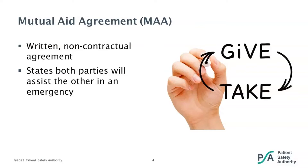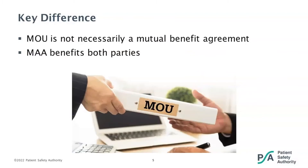A mutual aid agreement is very similar to a memorandum of understanding in that it is a written, non-contractual agreement between two parties. This agreement states that both parties will assist the other in an emergency or a time of need. But the key difference is that the memorandum of understanding is not necessarily a mutual benefit agreement. The mutual aid agreement benefits both parties in that the agreement will provide aid to each other in a time of need. But a party entering into a memorandum of understanding may agree only to help the other party without any reciprocal aid.